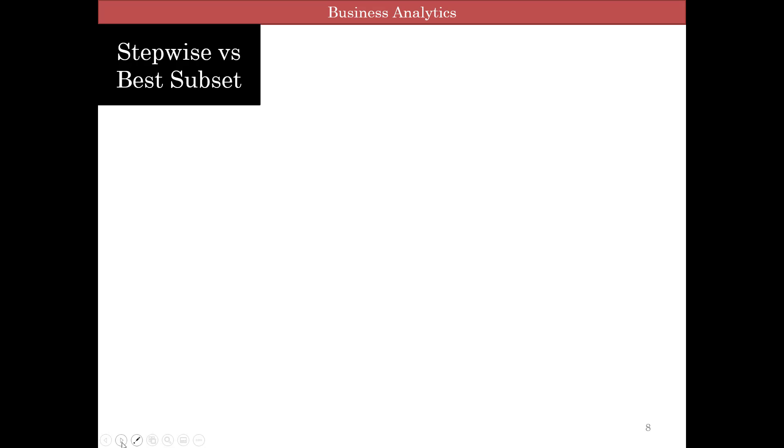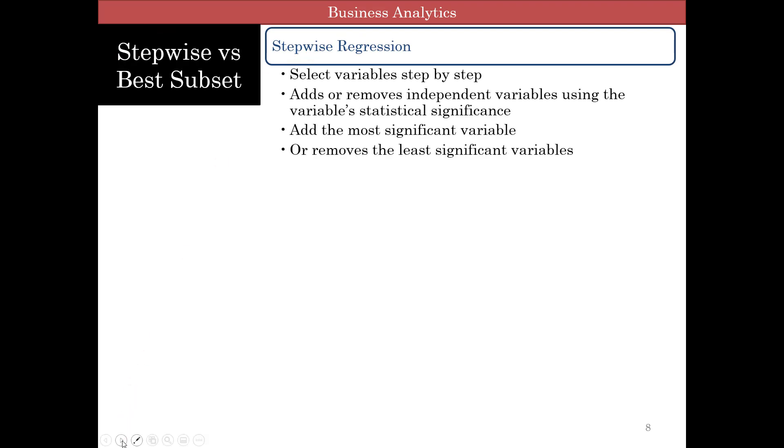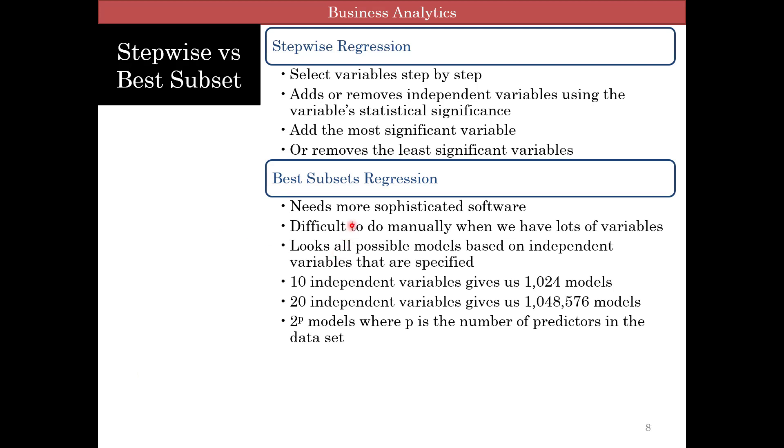So now that we have finished with tips for regression, we're going to talk about some different regression methods. The first one is stepwise regression, which is what we've been doing, which is either forward addition or backward elimination. We talked about it. But there's also something called best subsets regression. This is harder to do in Excel, needs more sophisticated software. And what it does is it looks at all possible models based on independent variables that are specified. So for example, if you have 10 independent variables, that gives us 1024 models. Look at all the combinations. So 20 independent variables gives us more than a million models. So it's 2 to the power of p, where p is the number of predictors. So this can get large very, very quickly.